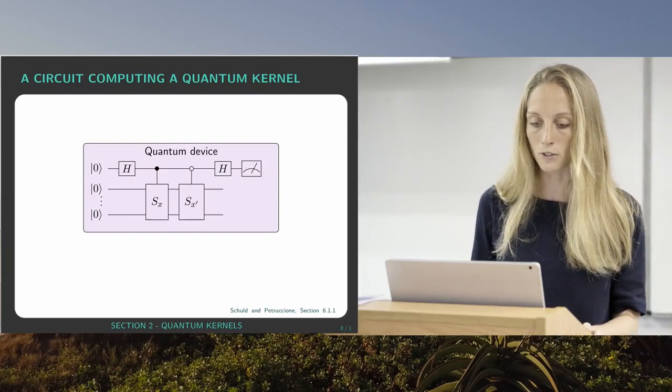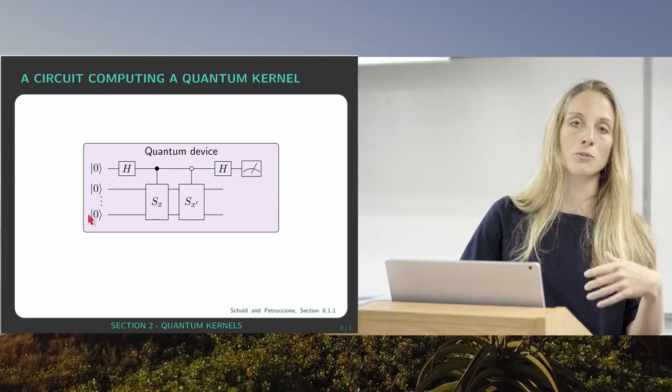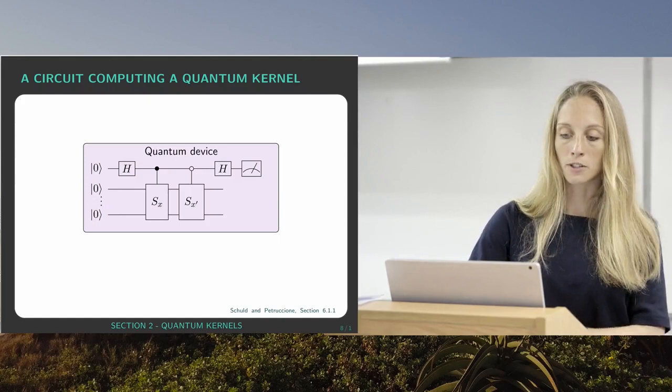We've got two registers basically. The first one is just a single qubit that is an ancilla register and the other qubits are there to actually encode or represent the quantum feature vector. At the beginning they're all in the ground state and after the first Hadamard gate we have the first qubit in a uniform superposition.